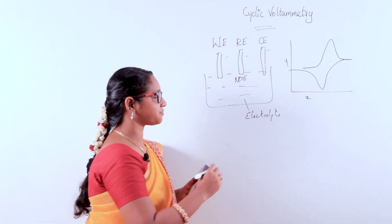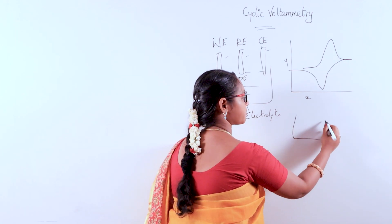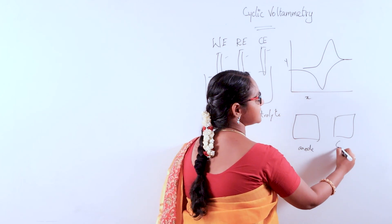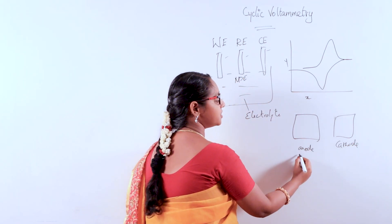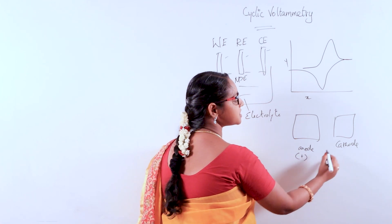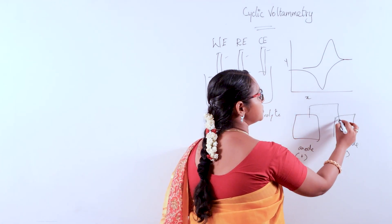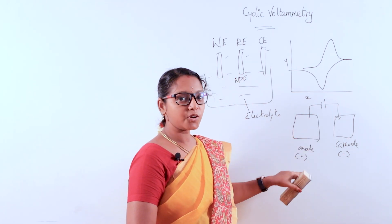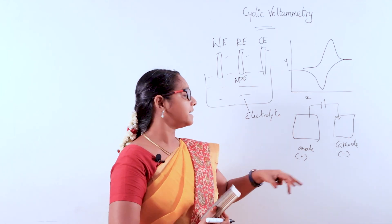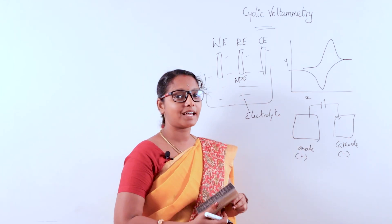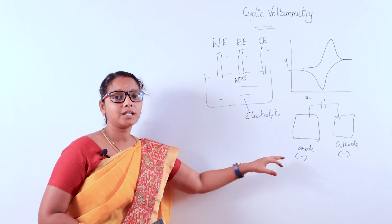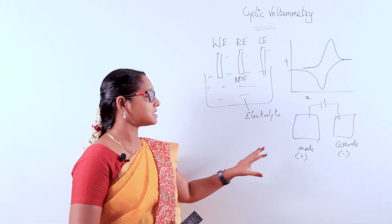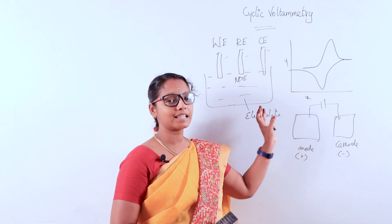In cyclic voltammetry, there is an anode part and a cathode part. The anode is positive and the cathode is negative. The anode involves loss of electrons, where oxidation occurs, and the cathode involves gain of electrons, where reduction occurs.